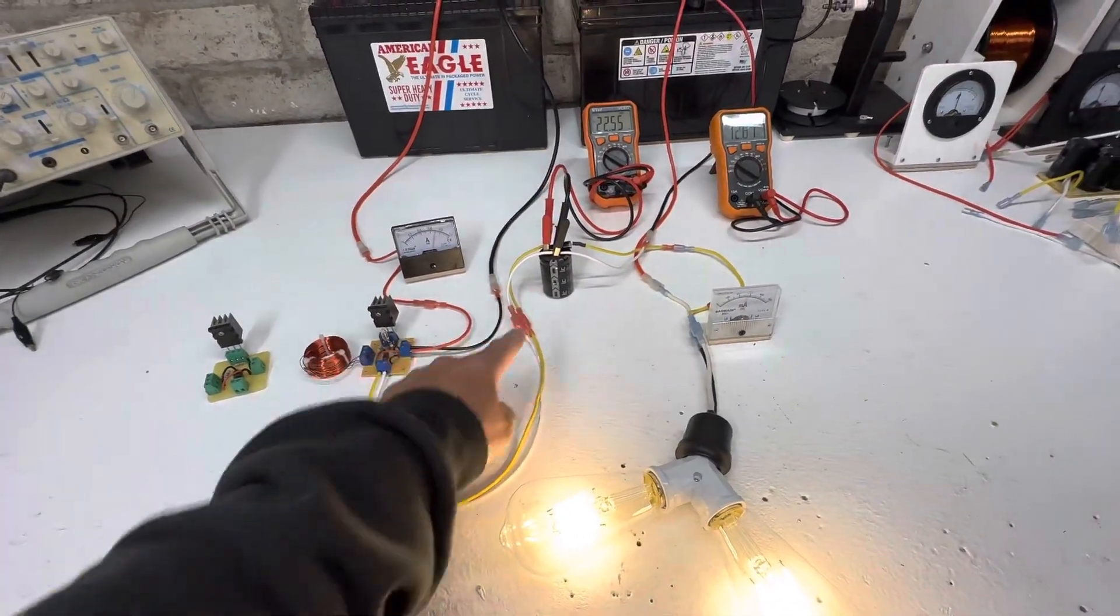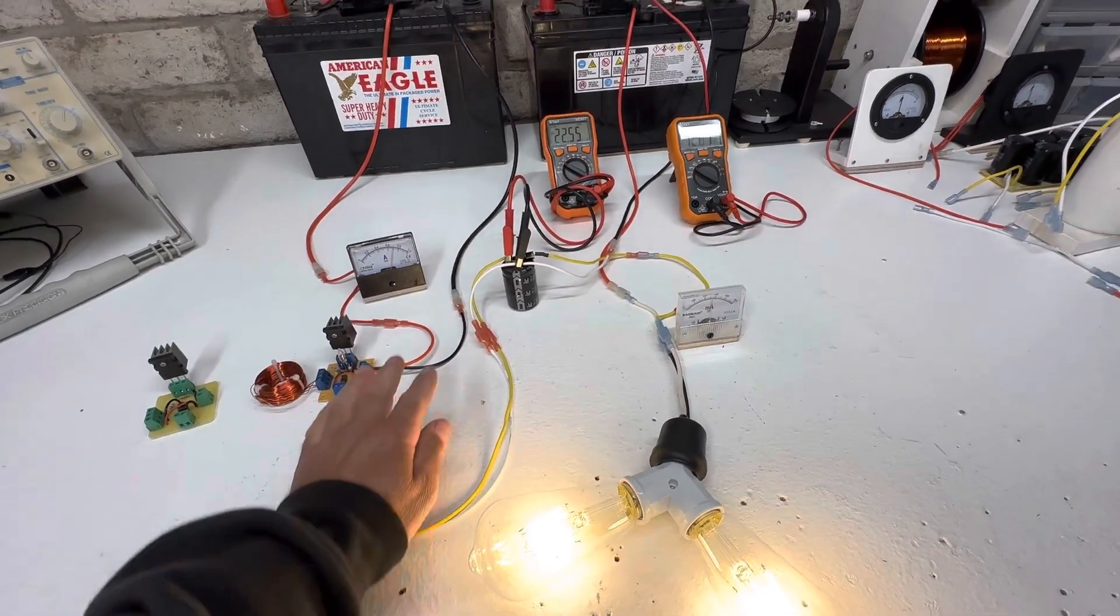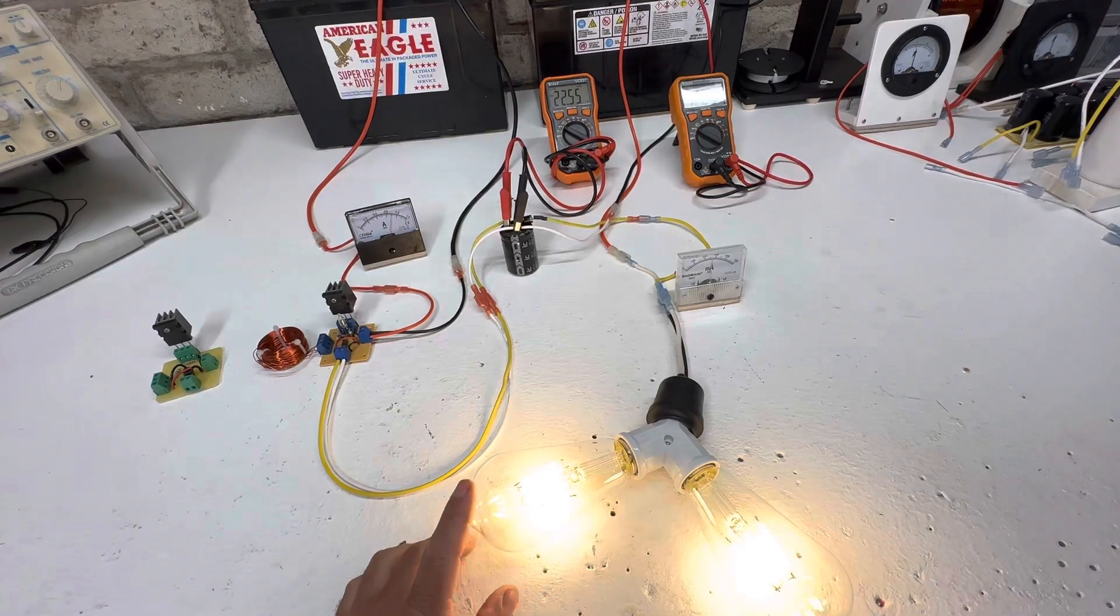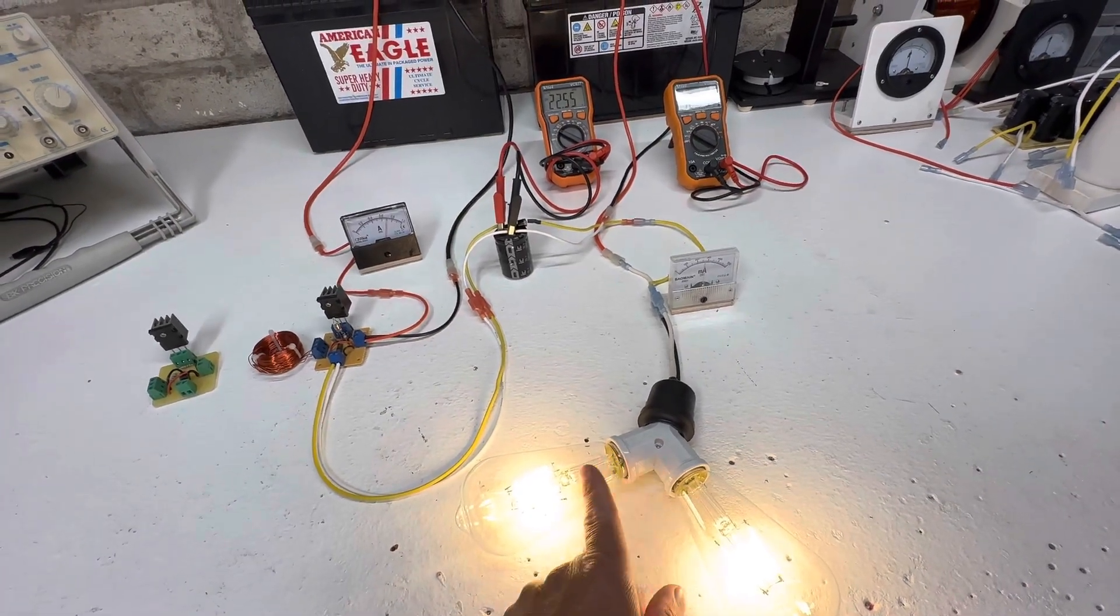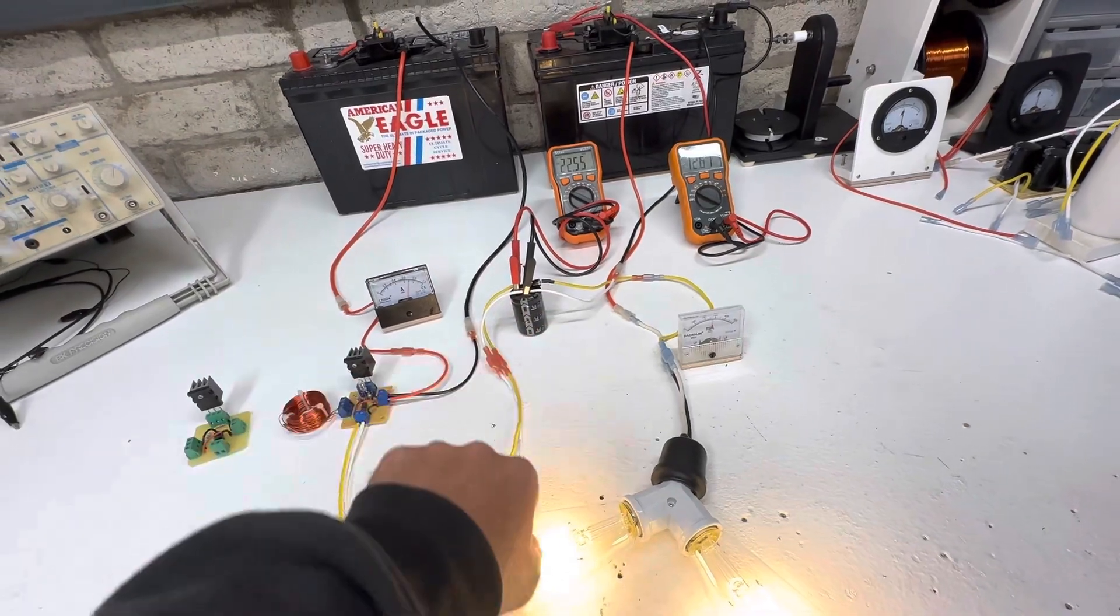The filter capacitor is kind of important because this puts out a whole bunch of oscillating spikes. So that kind of evens it out to where these lights have little circuits so it doesn't fry the circuits. So it just works as a filter and smooths everything out.